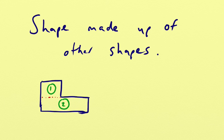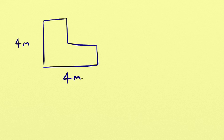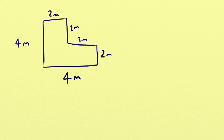Let's have a go at working out the area of a compound shape. Let's draw an L shape, and let's say this L shape has dimensions of 4 metres by 4 metres. The bit that's missing is 2 metres, and this bit is 2 metres. We have a couple of dimensions missing, but we can work them out: 4 metres take away 2 metres leaves 2 metres on each remaining side. Because there's no formula for the area of an L shape, we're going to split it into other shapes we can use.